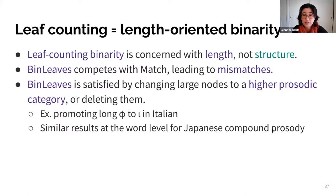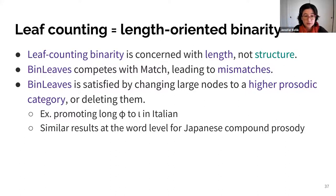The Italian situation: Italian phrasing maps small XPs to phis but maps larger XPs containing three or more words to intonational phrases, creating a syntax-prosody mismatch. Leaf counting binarity gives us this category promotion, but branch counting cannot. This is because leaf counting is a length-oriented notion of binarity, not concerned with structure. It competes with match, driving mismatches. Bin-leaves is satisfied by changing large nodes to a higher prosodic category or deleting them, as when the phi for the TP is promoted to the iota level. Similar results occur at the word level for Japanese compound prosody.